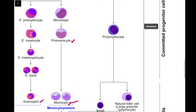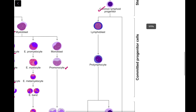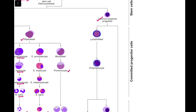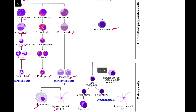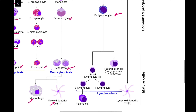The other series that arises from the hematopoietic cell is the lymphoid series. This begins with the common lymphoid progenitor, which gives rise to lymphoblasts and progresses through the prolymphocyte stage in the bone marrow. Finally it forms small lymphocytes, both B and T types, as well as NK cells, also known as large granular lymphocytes. Lymphoid dendritic cells also arise from the lymphoid series and are mostly found in the tissues.